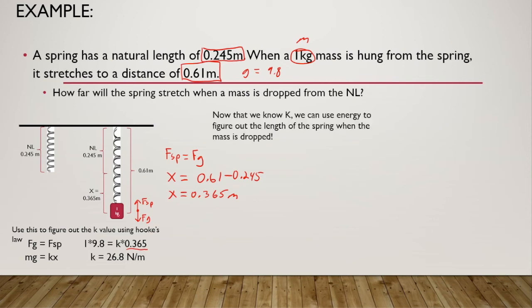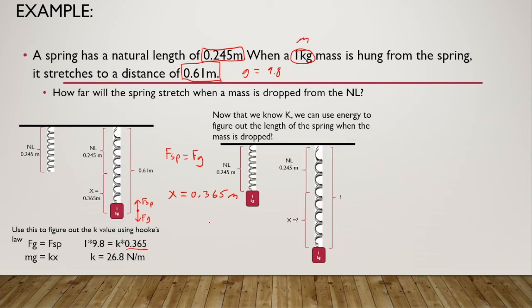Now that we know K, we can use energy to figure out the length of the spring when the mass is dropped. The mass is dropped from the natural length and falls all the way down to the maximum stretch point. It's going to move down and back up repeatedly, hovering around an equilibrium point. But we want to figure out the maximum distance this spring will stretch once it is dropped.